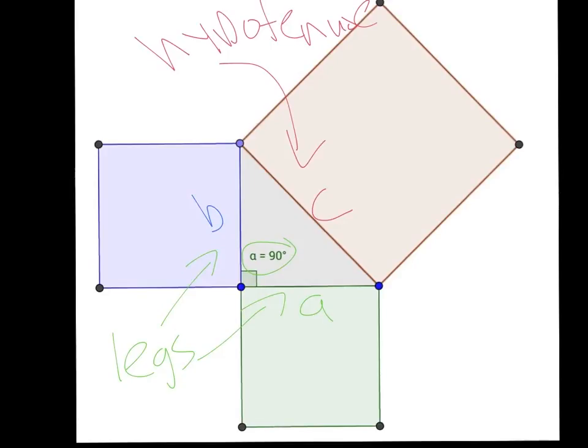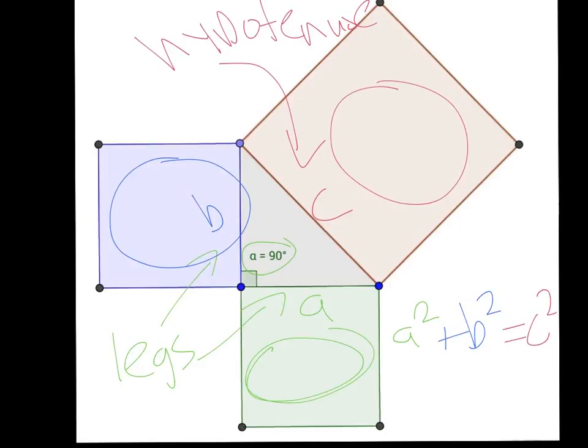If you look at the Pythagorean Theorem, what it's going to tell you is that if you have a right triangle, then A squared, which would be represented by this space here, plus B squared, which is represented by this square here, is going to equal C squared, which is going to be this right here.